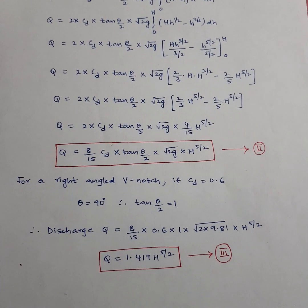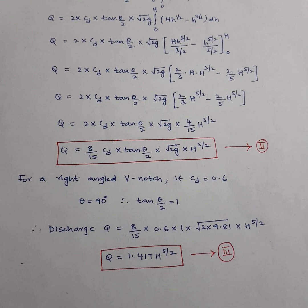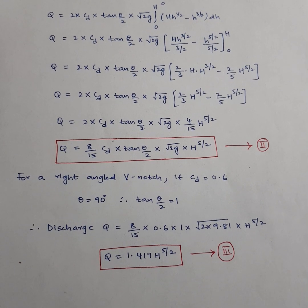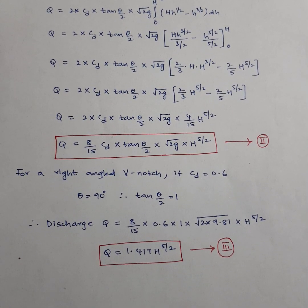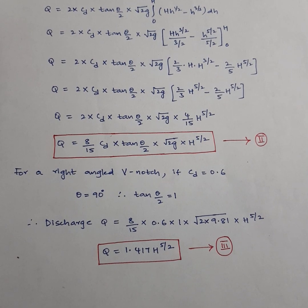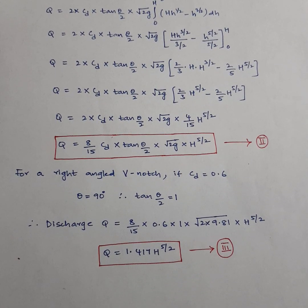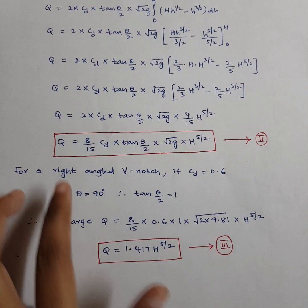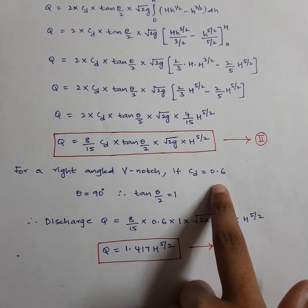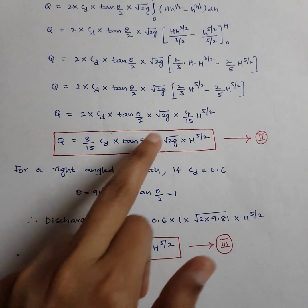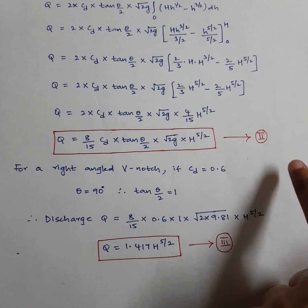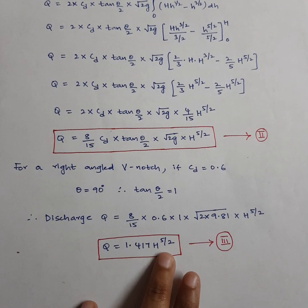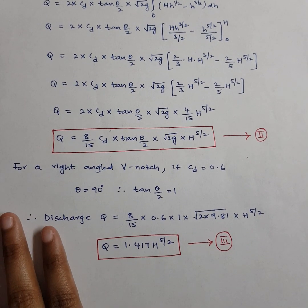For a right-angled V-notch, theta is 90 degrees. Drawing the center line gives 45 degrees on each side, so tan(theta/2) = tan(45°) = 1. The formula then becomes Q = (8/15)·CD·root(2g)·H^(5/2). If CD = 0.6 and g = 9.81, substituting and simplifying gives Q = 1.417·H^(5/2).